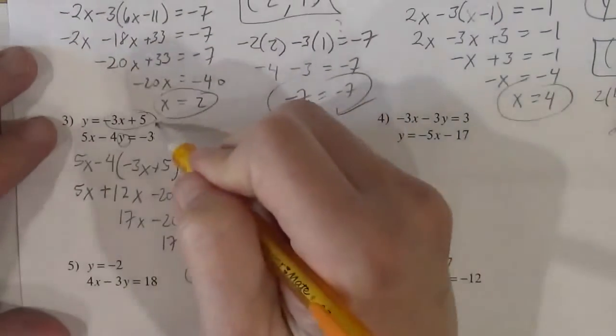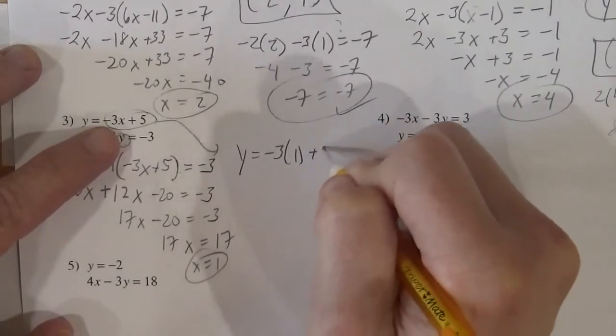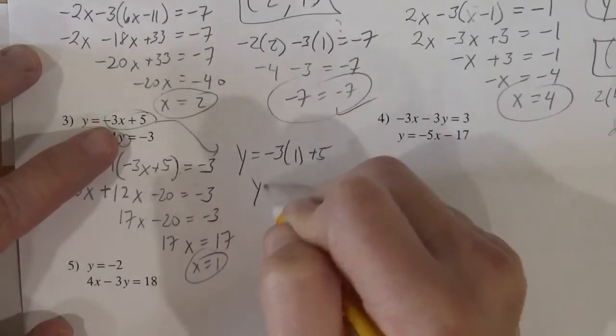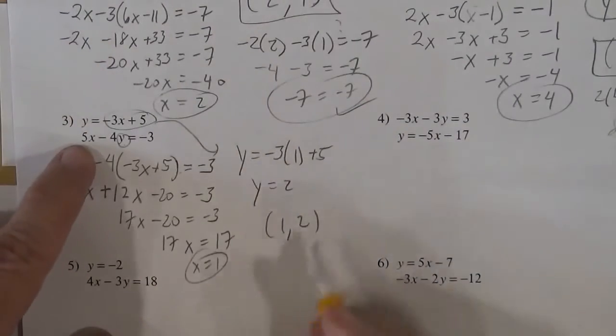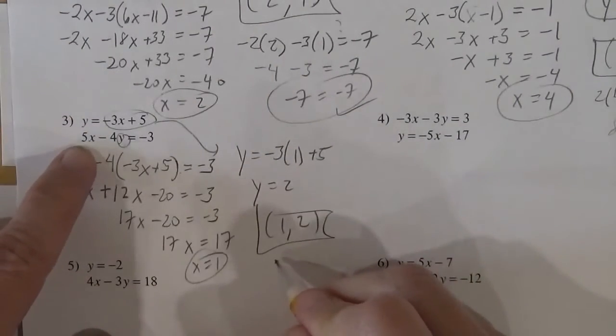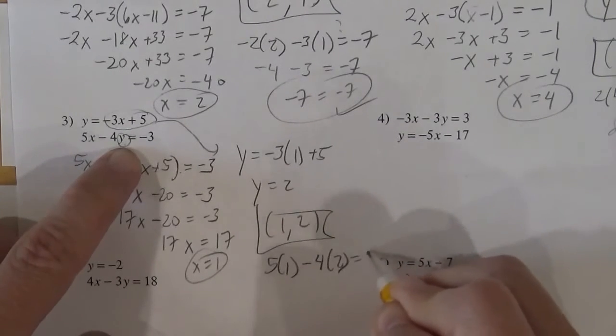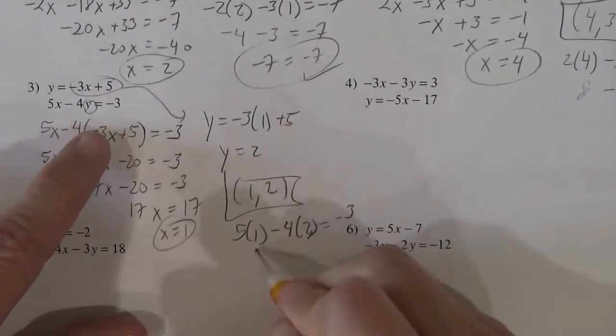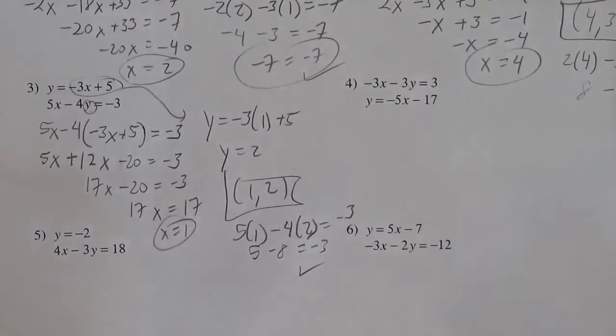So x is 1. Plug it back in. The y should be negative 3 times 1 plus 5. So it looks like the y is 2. So 1, 2 should work. We'll check it in this one. When x is 1, we'd have 5 times 1 minus 4. The y was 2. Does that really equal negative 3? That's 5 minus 8. Does that equal negative 3? Heck yeah, it does. Awesome.